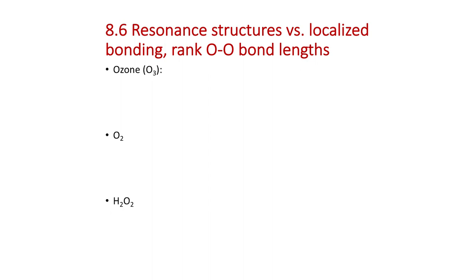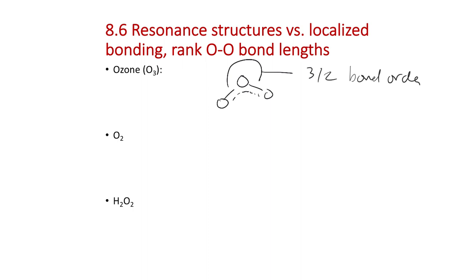Let's think about how resonance impacts bond length. For ozone, the averaging and compositing means the two outer O's have the same bond length because they have the same average bond — a three-halves bond order. They're identical to each other; one bond in ozone isn't shorter than the other. It's not alternating double-single — it's always like a three-halves bond. Ozone is not an A–B equilibrium going back and forth; it's a real-time compositing.